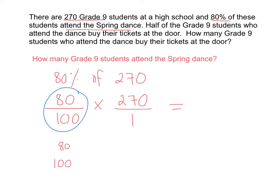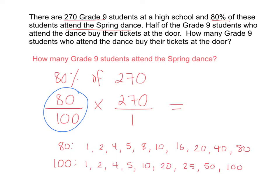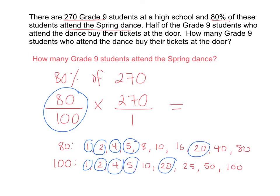So let's write the factors of 80. The number 80 has 10 factors. What are the factors of 100? 100 has 9 factors. Can you find which factors they have in common? 1, 2, 4, 5, and 20.